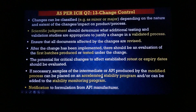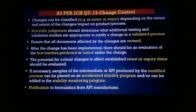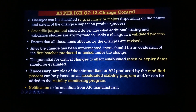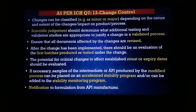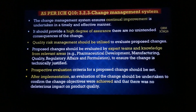If necessary, samples of the intermediate or API produced by the modified process can be placed in an accelerated stability program or taken into a stability monitoring program. In some reprocessing or reworking cases, we need to run a stability monitoring program for those batches based on the process changes. Finally, the firm must notify the formulation unit about this change control — this is the change control procedure mentioned in ICH Q7.